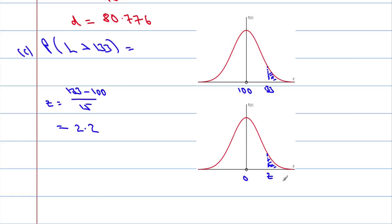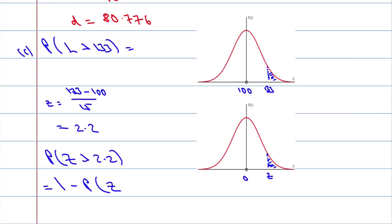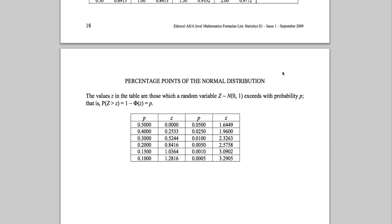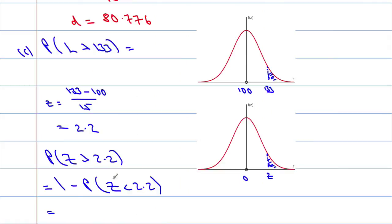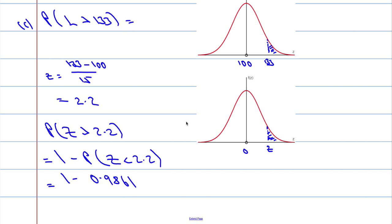The tables don't do probabilities to the right directly, so the probability that the standard normal is greater than 2.2 equals 1 minus the probability it's less than 2.2. Looking up 2.2 in the table gives 0.9861, so 1 minus 0.9861, typed into the calculator, gives 0.0139.